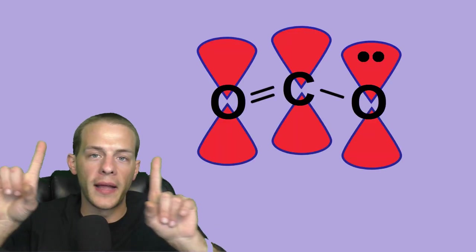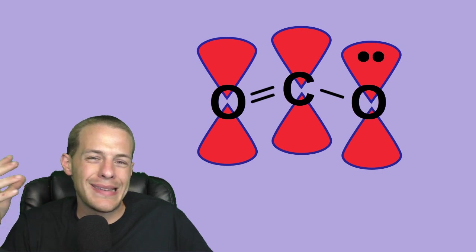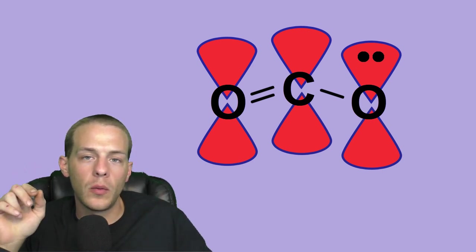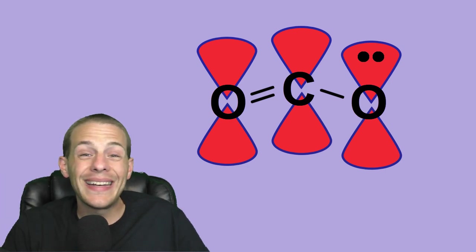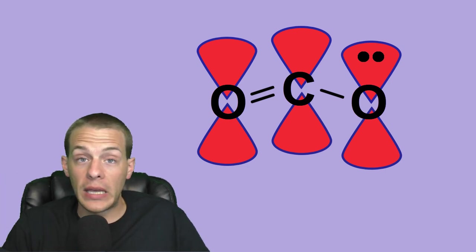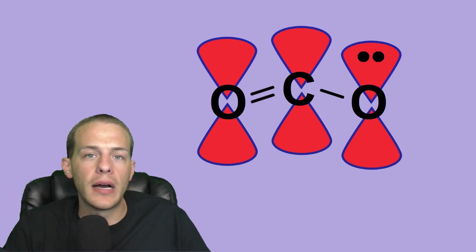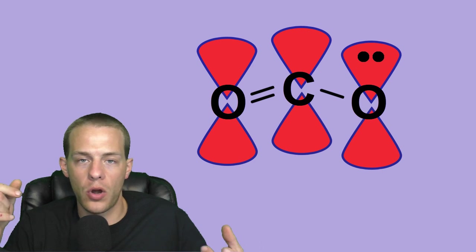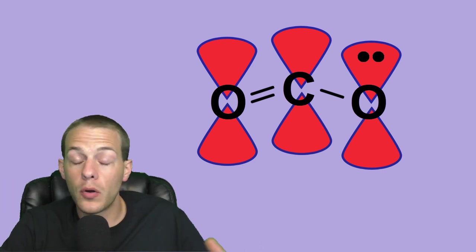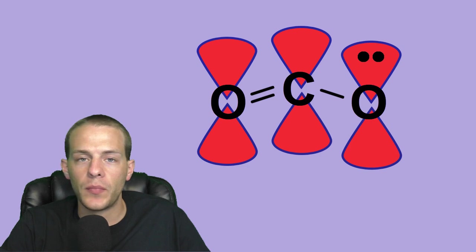So why am I hammering this point over and over again? Well, when you have these pi bonds and you have these sideways overlaps of p orbitals, you start to build a network of parallel p orbitals. And when you build a network of parallel p orbitals, electrons that reside in those p orbitals, in some cases can actually be delocalized or shared among that entire chain, that entire network of parallel p orbitals. So why is this important for resonance?